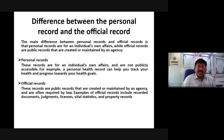The main difference between personal records and official records is that personal records are for an individual's own affairs, while official records are public records created or maintained by an agency. Personal records are not publicly accessible. For example, a personal health record can help you track your health and progress towards your health goals.